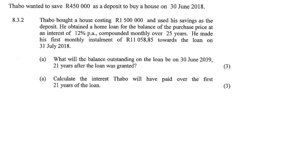Now Thabo bought a house. Some of you might wonder — is he buying the house for 450,000 or is the house 1.5 million? The house itself is 1.5 million. But when you buy a house in real life, the bank asks you for a deposit. A deposit is an amount of money you give them upfront — it's a safety measure for the bank. They don't want to give you all the money; they want you to contribute a little. So the 450,000 is just the deposit, not the total value of the house.